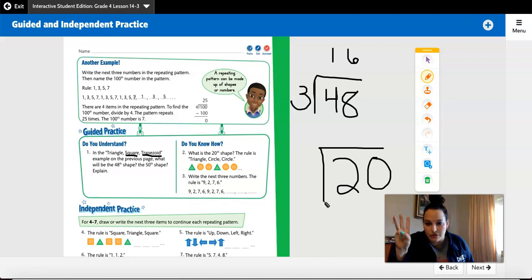So it's triangle, circle, circle, triangle, circle, circle. So I do 20, the place that I want to find out, the position, 20, divided by how many are in the pattern. So 20 divided by 3. And I know that 6 times 3 is 18.